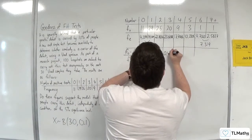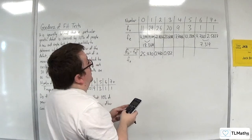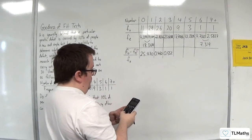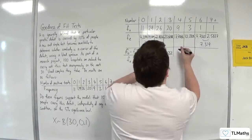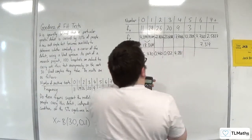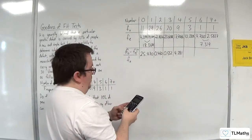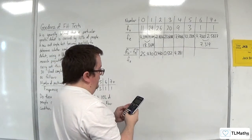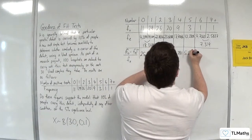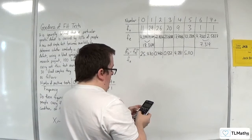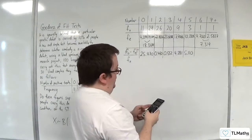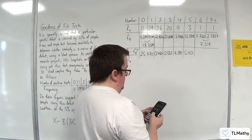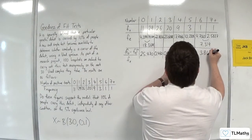Next one, 9 take away 17.7066 squared divided by 17.7066, so that's 4.281. Then we've got 3 take away 10.2305 squared divided by 10.2305, so 5.110. And then our last one, the observed here is 2. So 2 take away 7.319 squared divided by 7.319, so 3.866.